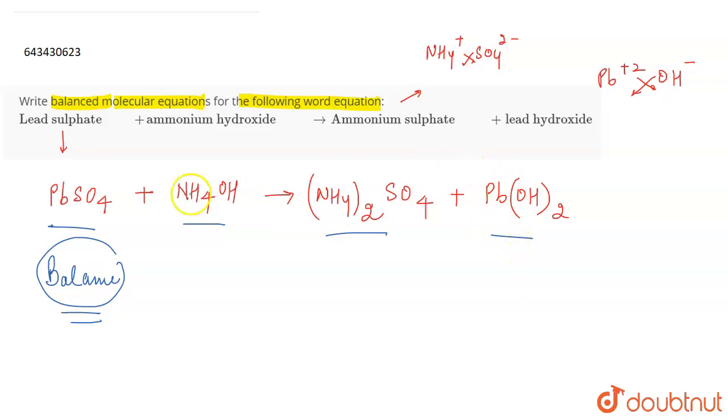If you look at it right now, we have one lead in the reactant side and one lead in the product side, which means that lead is right now balanced. We have one ammonium in the left hand side, but two in the right hand side, which means that we have to balance it. So we will add two over here. So now we have two NH4 here and two NH4 here.